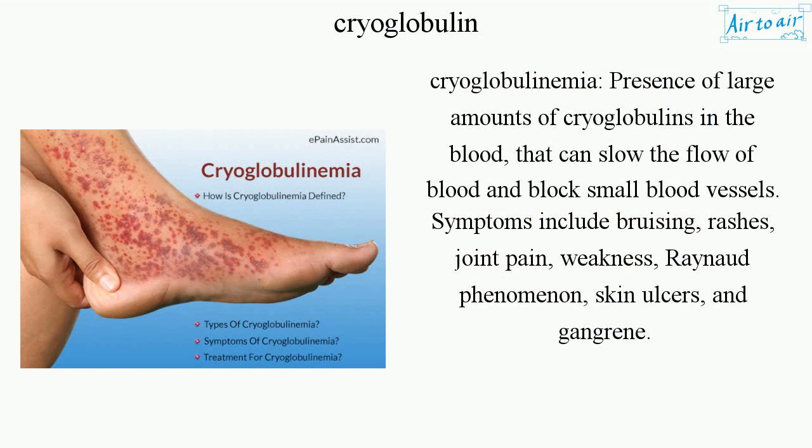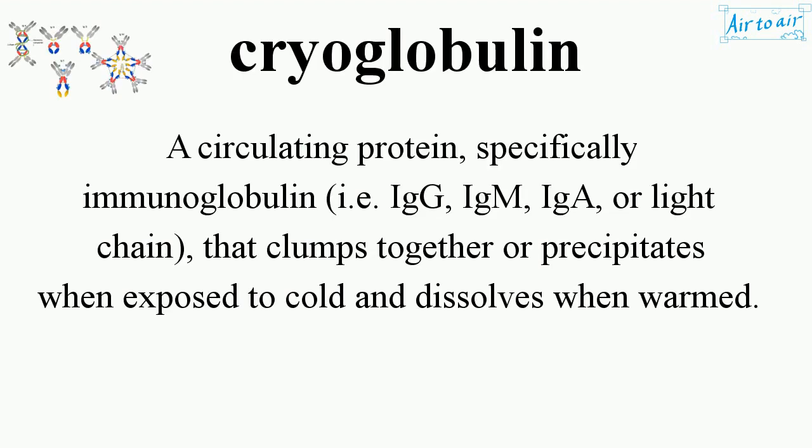Cryoglobulinemia is the presence of large amounts of cryoglobulins in the blood that can slow the flow of blood and block small blood vessels. Symptoms include bruising, rashes, joint pain, weakness, Raynaud's phenomenon, skin ulcers, and gangrene.